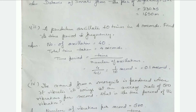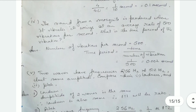Numerical 4: The sound from a mosquito is produced when it vibrates its wings at an average rate of 500 vibrations per second. What is the time period? Time period equals 1 divided by number of vibrations per second: 1 divided by 500 equals 0.002 seconds.